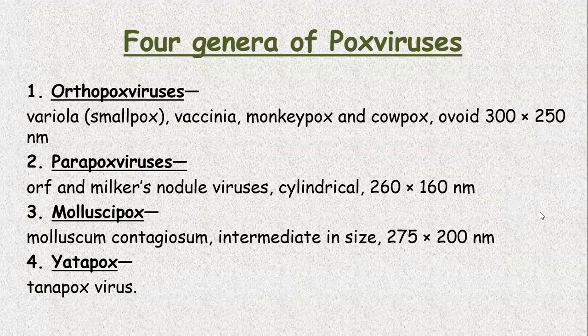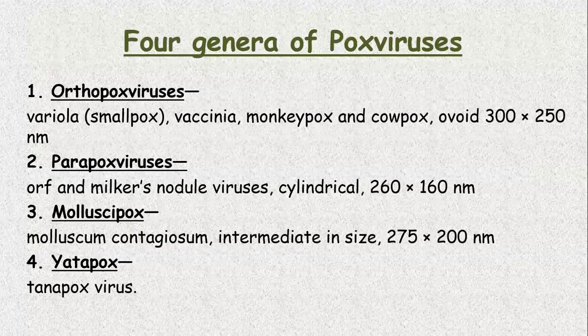There are four genera of poxviruses. The first is the orthopoxvirus that includes variola or smallpox, vaccinia, monkeypox, and cowpox — they are ovoid, 300 to 250 nanometer. Then parapoxvirus, which includes ORF and milker nodule viruses — they are cylindrical in shape and size is 260 to 160 nanometer. Then molluscipoxvirus — this is molluscum contagiosum virus with an intermediate size of 275 to 200 nanometer. Then there is another poxvirus called the Yatapox, which includes tanapox.